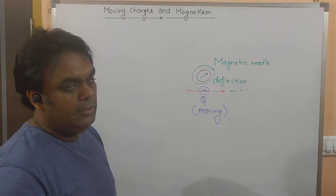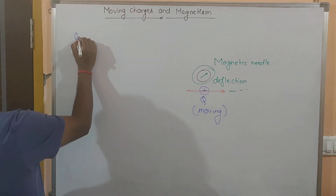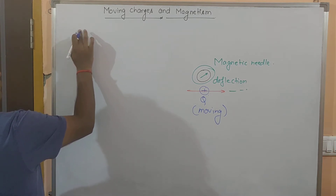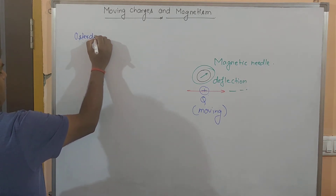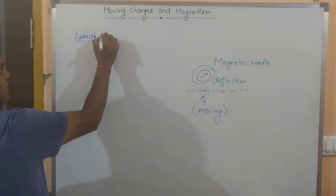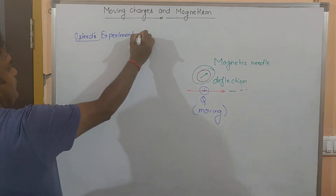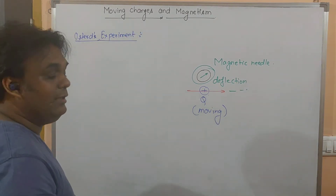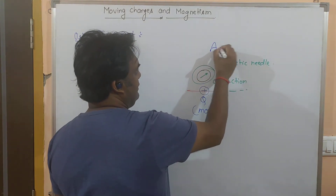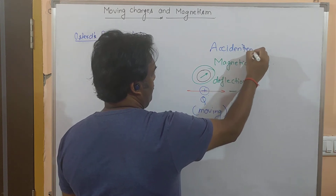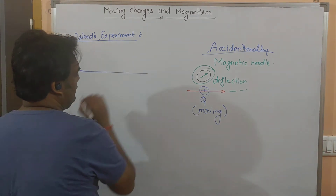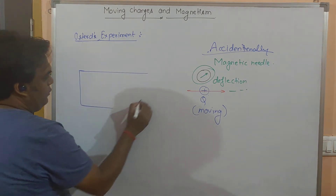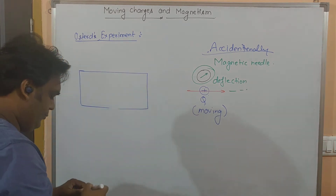As soon as the motion of the charge is stopped, the deflection in the needle also stops. There was a scientist called Oersted, and Oersted's experiment covers this. He discovered this accidentally, but then performed the experiment. He took a metallic wire and connected it to a potential supplier — a battery.